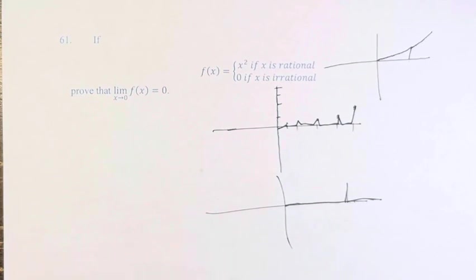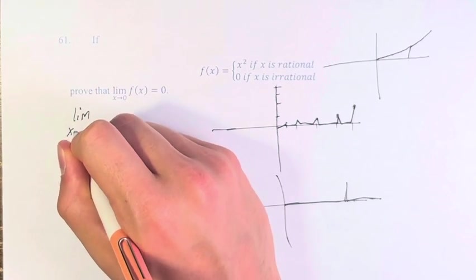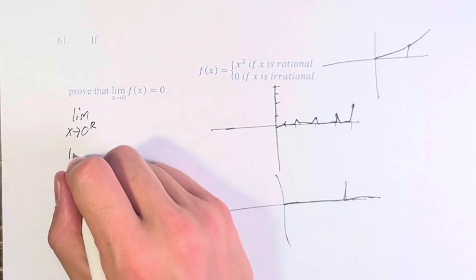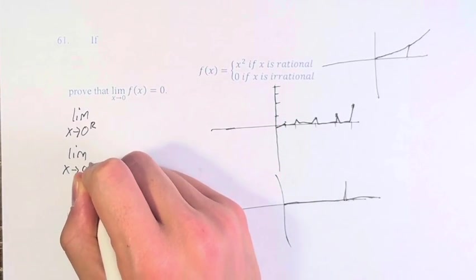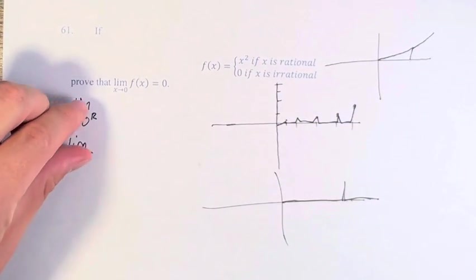And one way to think about this in terms of the actual algebraic ramifications of it is we can say the limit as x approaches 0 for rational numbers and the limit as x approaches 0 for irrational numbers. Think of this as from the left and the right. If both of these match,